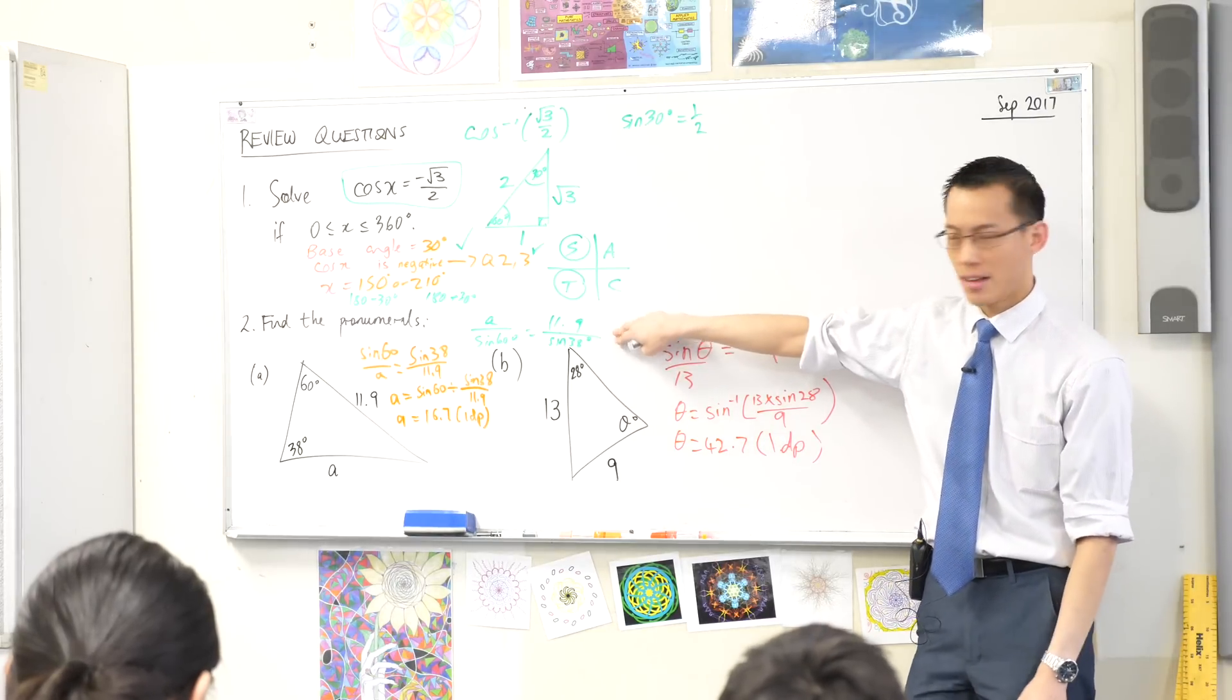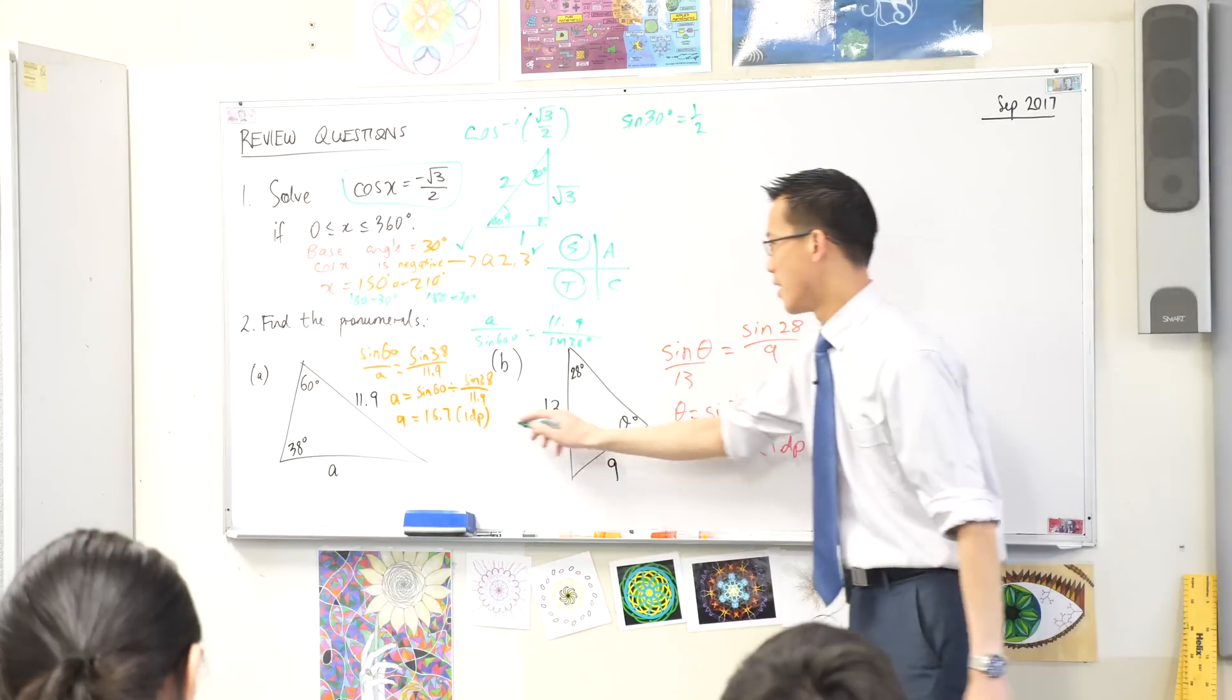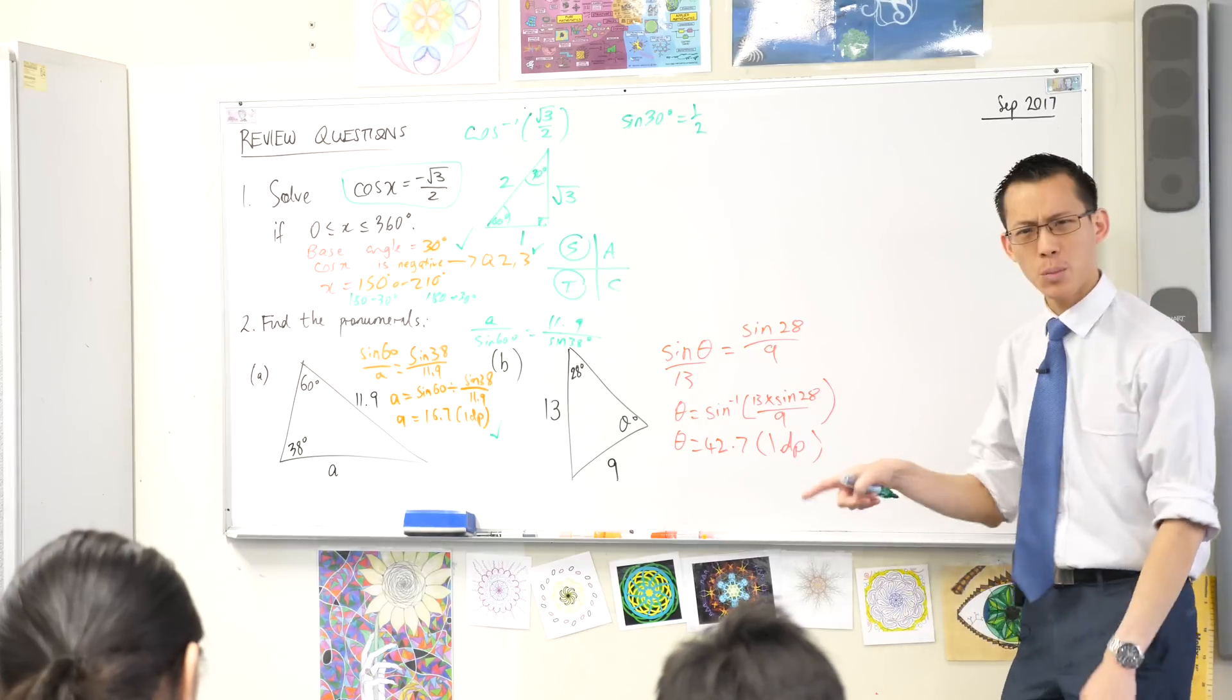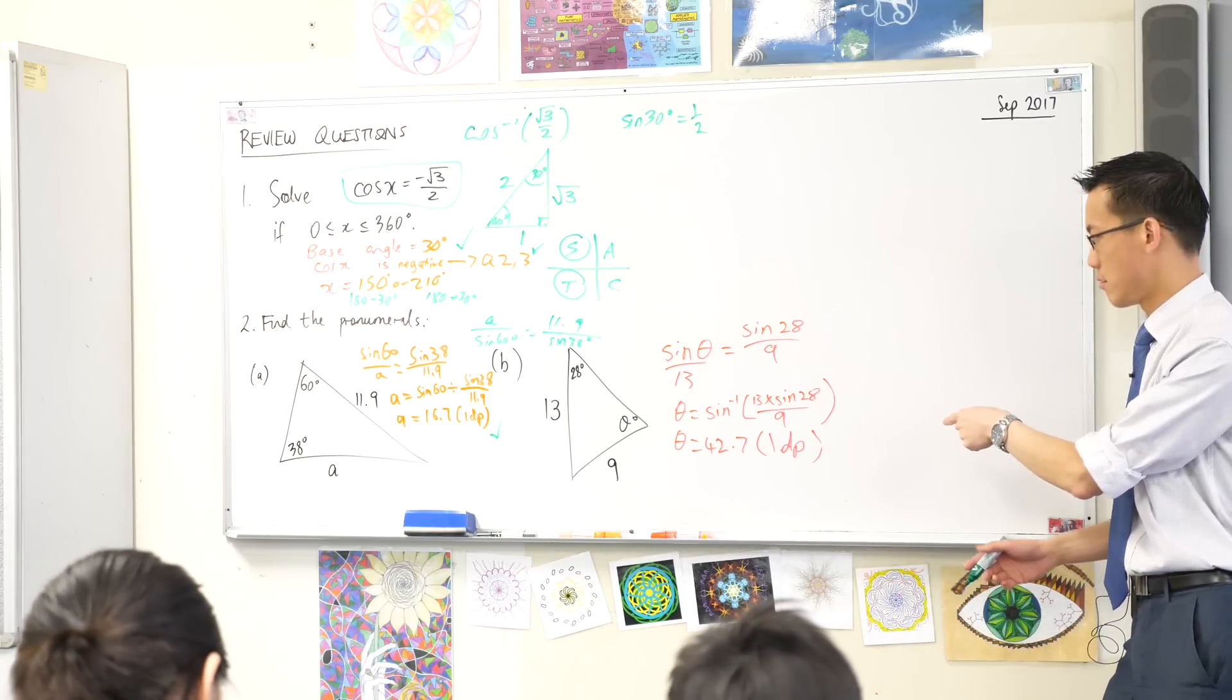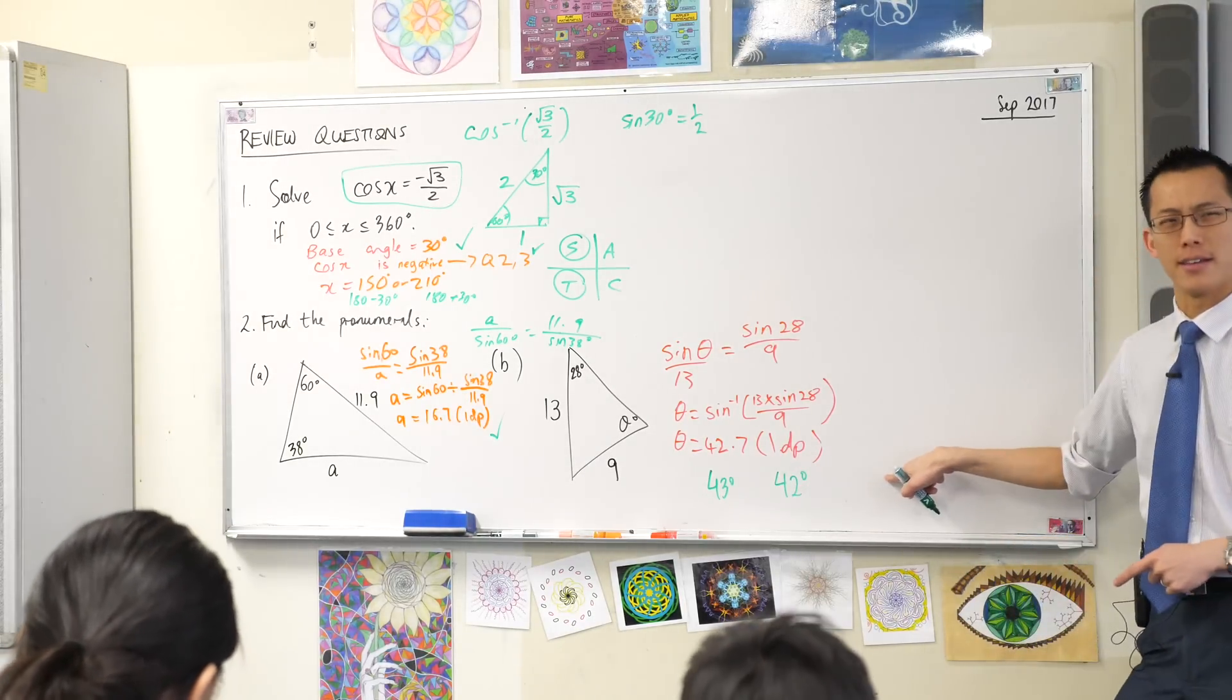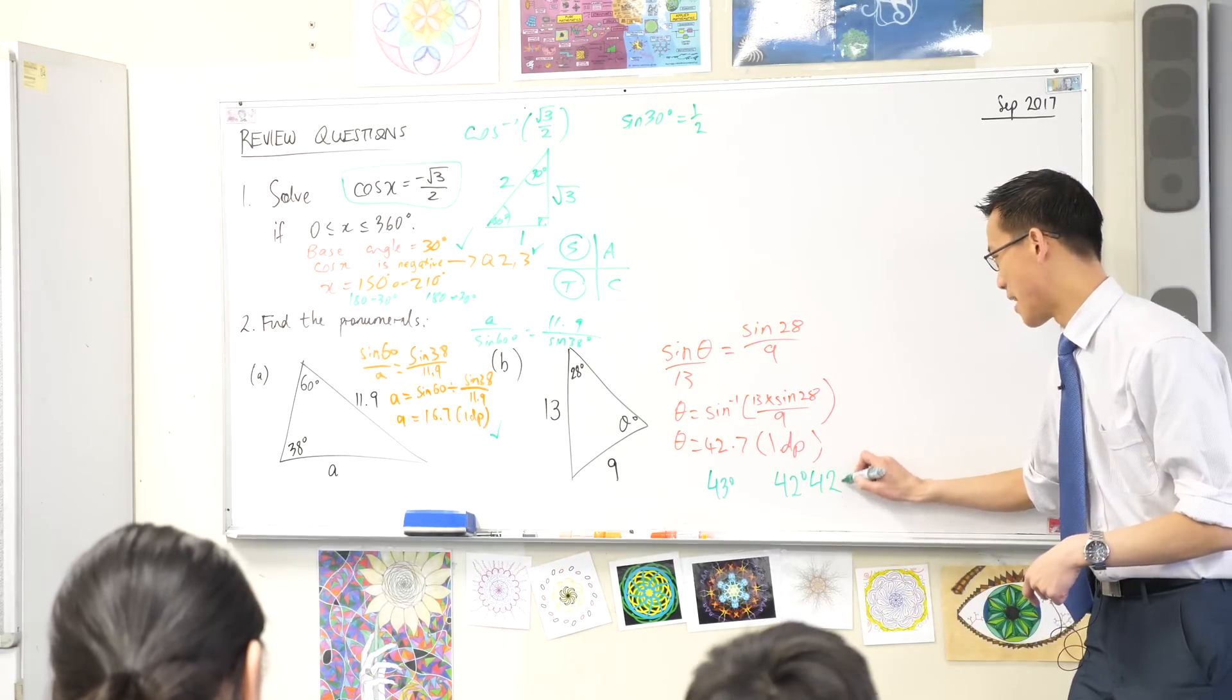42.7 degrees. I'm okay with that, but usually angles aren't rounded off to decimal places. How would we normally round them? Minutes, right? Or degrees. If it was to the nearest degree, what would our answer be? 43. That would be to the nearest degree. If we wanted to the nearest minute, it would be 42 degrees and how many minutes? Can you press the button? What do you get? 41? 42? That's a coincidence. I just made up those numbers. So there you go.